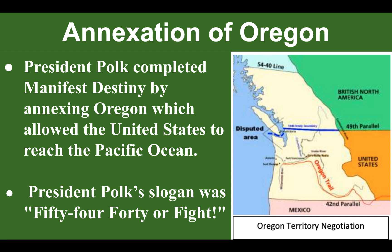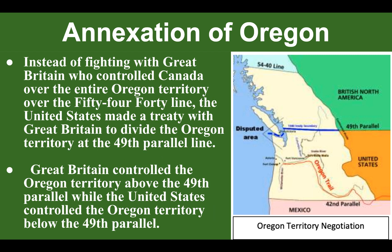Let's look at the annexation of Oregon. You'll see the map right here to give you a visual. President Polk completed Manifest Destiny by annexing Oregon, which allowed the United States to reach the Pacific Ocean. President Polk's slogan was '54-40 or Fight.' You'll see the 54-40 line at the top of the map. Instead of fighting with Great Britain, who controlled Canada over the entire Oregon Territory above the 54-40 line, the United States made a treaty with Great Britain to divide the Oregon Territory at the 49th Parallel Line.